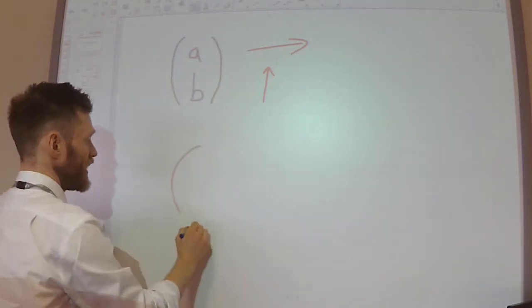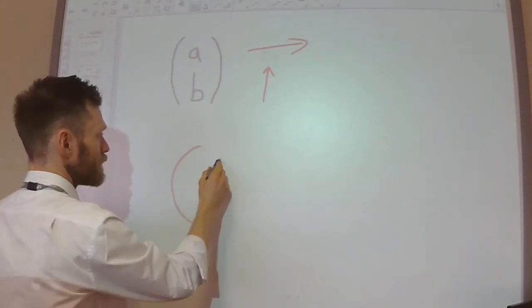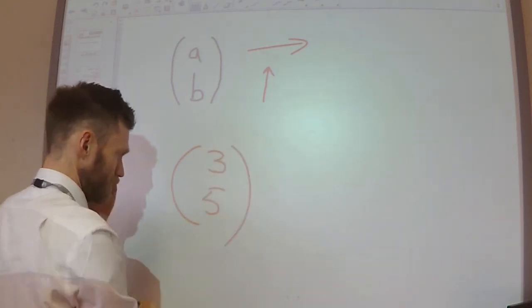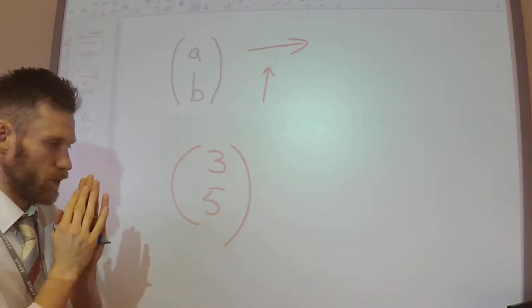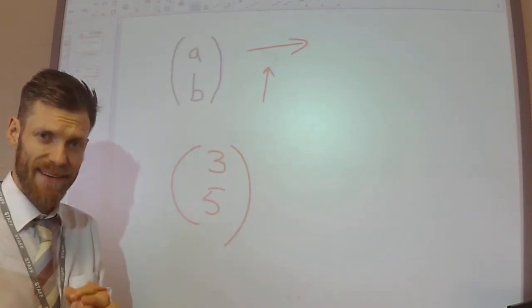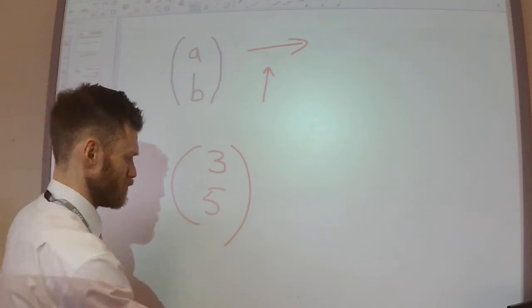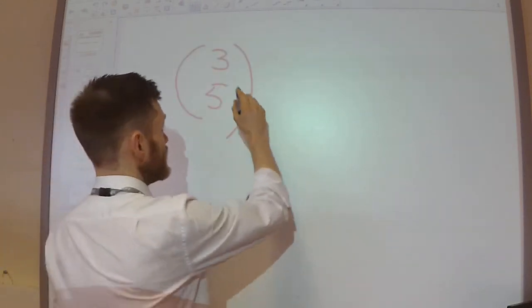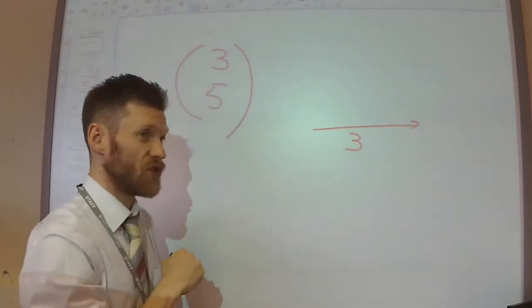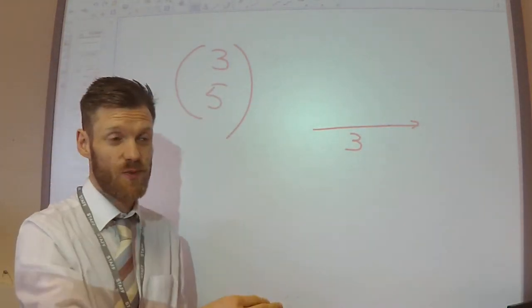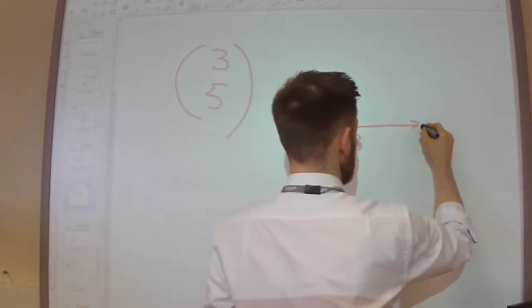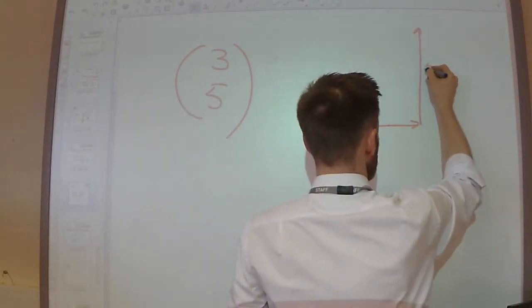So, if we had a vector like (3, 5), I want to work out what's the magnitude of this vector and what bearing does it act. This means that I go 3 squares to the right, or 3 squares to the east, and 5 squares to the north.